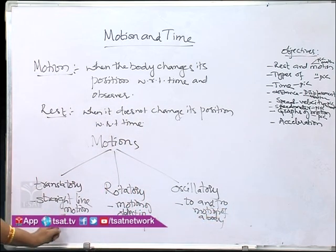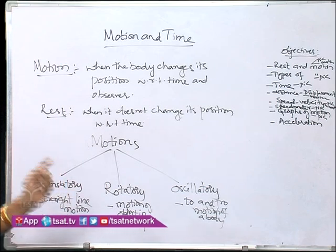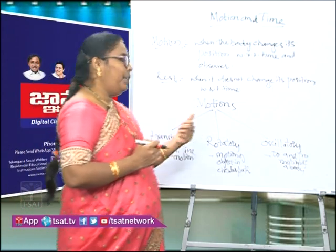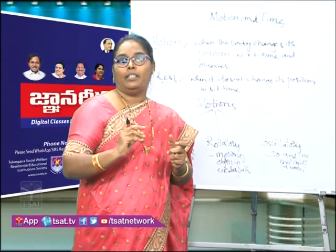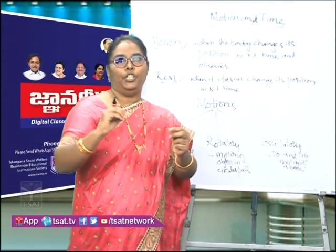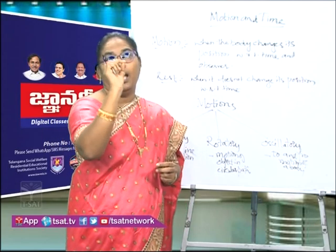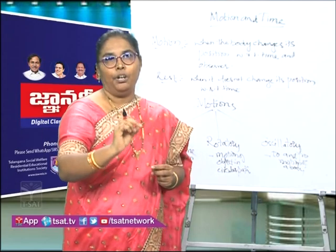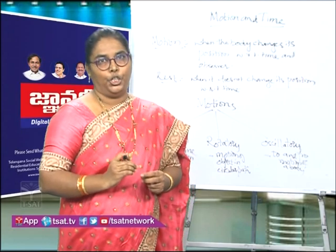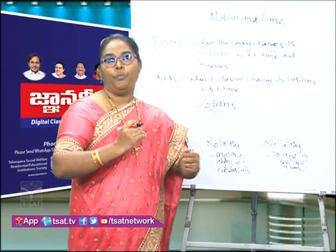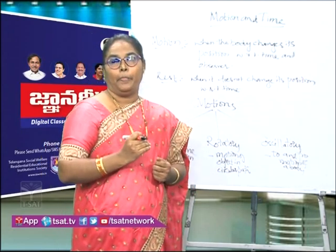Translatory motion is a straight line motion — when a body moves in a straight line, we say the body is in translatory motion. Rotatory motion is the motion of particles in a circular path with respect to a center or axis of rotation. And oscillatory motion is the to-and-fro motion.